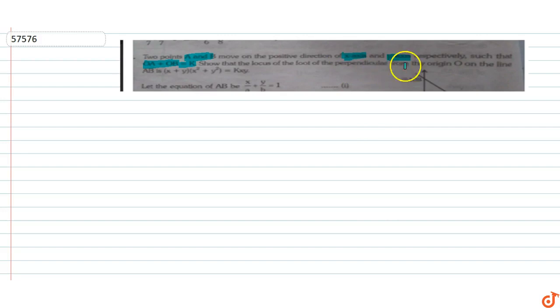The question given is: two points A and B move on the positive direction of x-axis and y-axis respectively such that OA plus OB equals to K. Show that the locus of the foot of perpendicular from origin O on the line AB is x plus y into x squared plus y squared equals to Kxy.